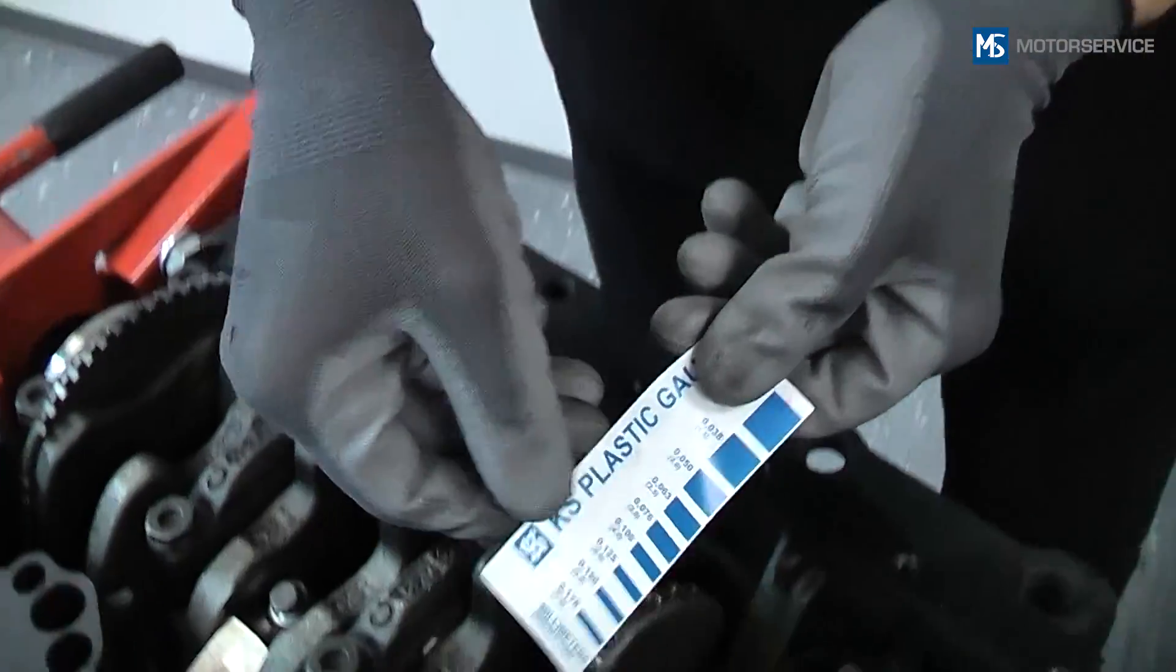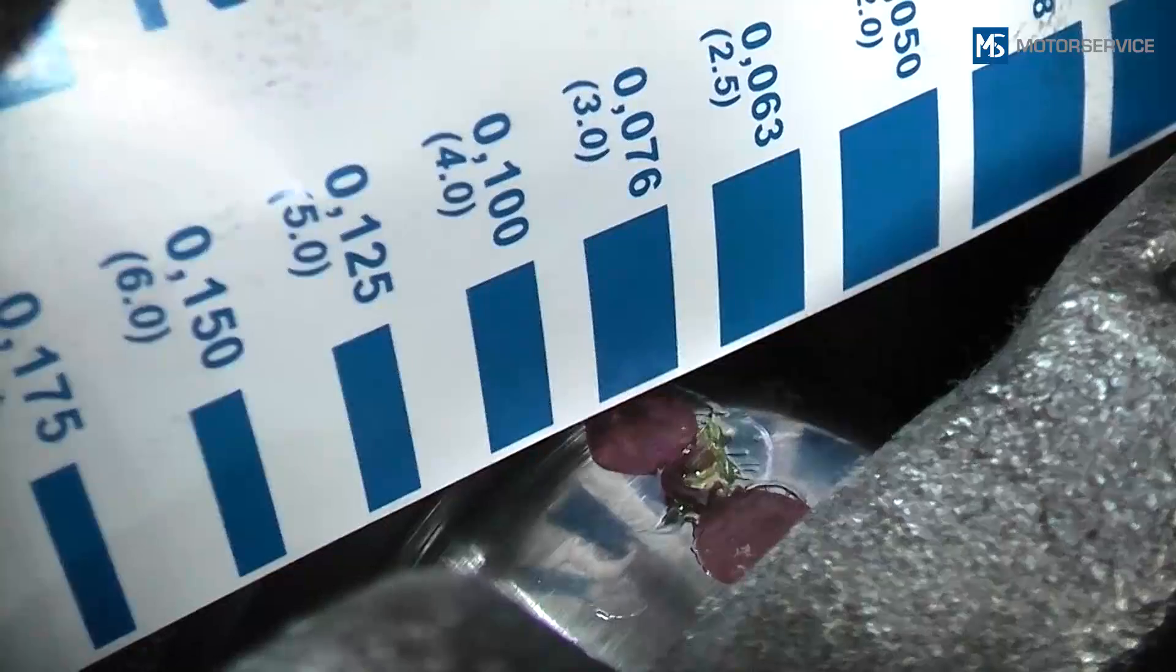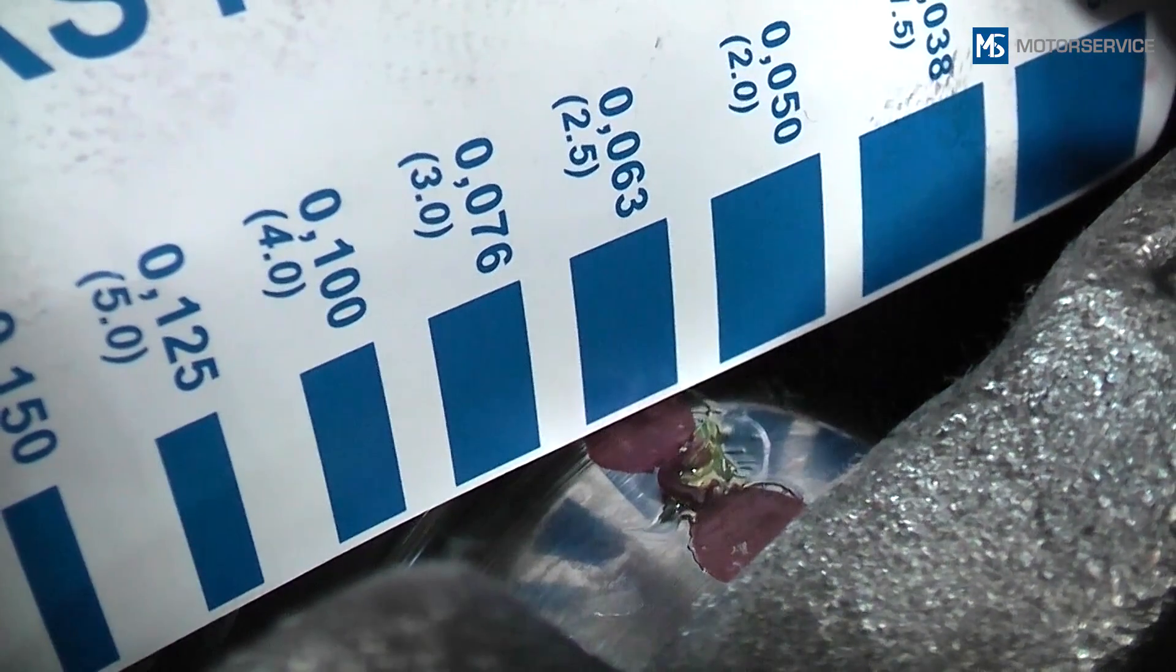After removing the bearing cap, the bearing clearance can be measured using the measuring scale provided. The wider the measuring strip when pressed, the smaller the bearing clearance.